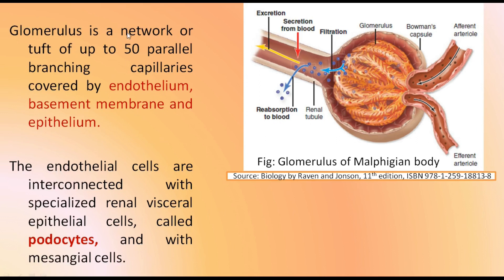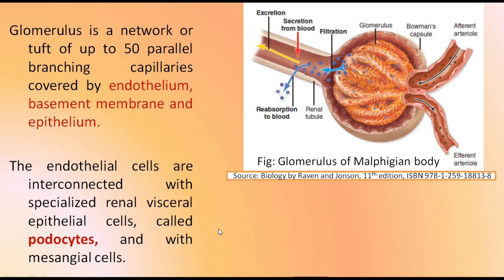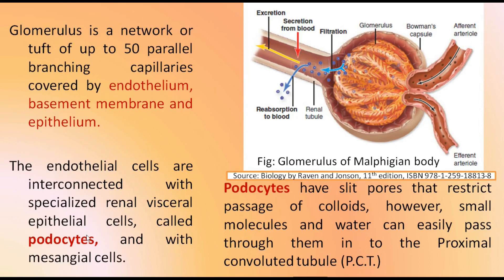Each Bowman's capsule contains a network of blood capillaries called the glomerulus. The glomerulus is a tuft of up to 50 parallel branching capillaries covered by endothelium, basement membrane, and epithelium. The endothelial cells are interconnected with specialized renal visceral epithelial cells called podocytes, and also with mesangial cells.